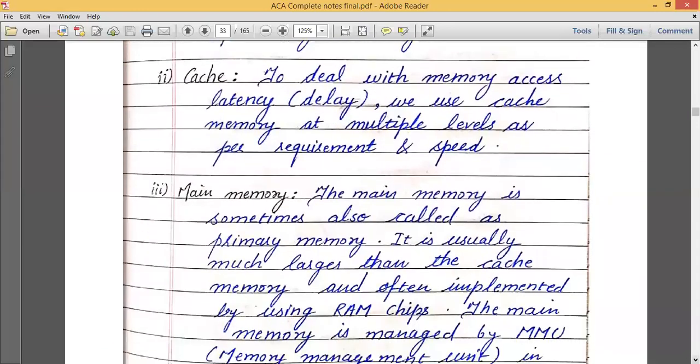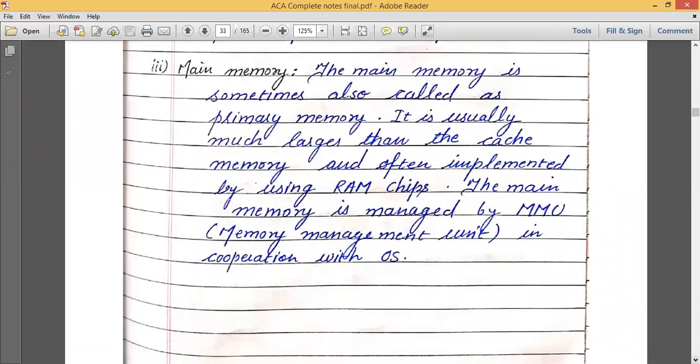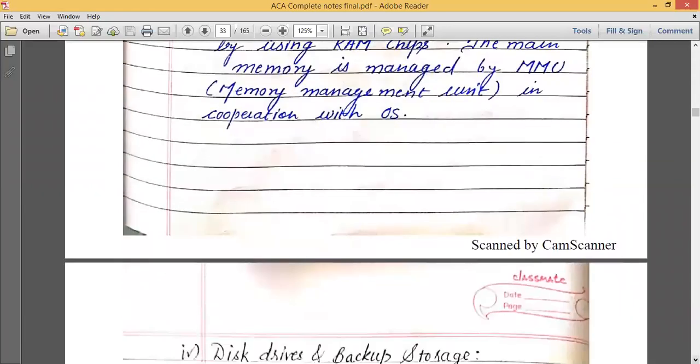Now the second type of memory storage device was cache. Cache is normally used to deal with memory access latency. The delay happens in the main memory or hard disk. We have an intermediate memory used, cache. This cache can be used at multiple levels as per requirement and speed. Where we store recently used data, and if that data is referenced further in future, we can access it with less delay. Next storage device is main memory. The main memory is also called primary memory. It is very large in cache comparison. It is used by RAM chips and is managed by memory management unit which is operated by operating system.